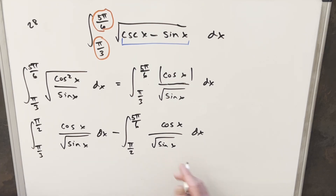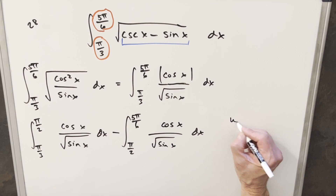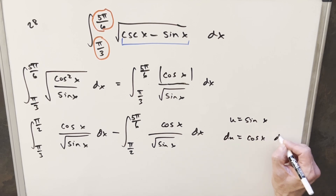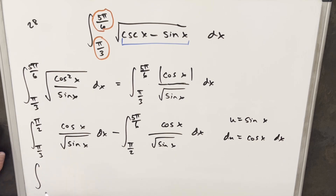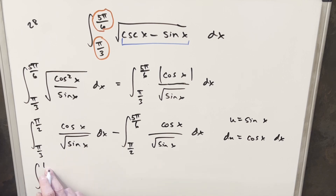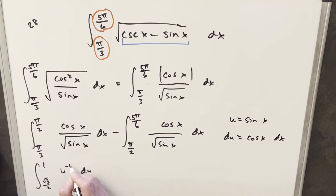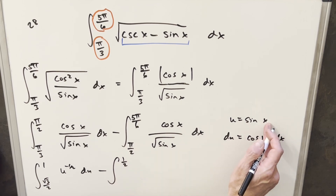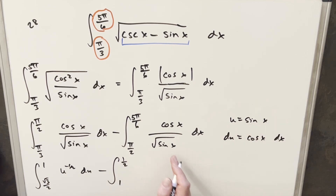Now we have the same integrand in both cases, so I'll do a u-substitution. Let u equal sine x, then du equals cosine x dx, which appears in the numerator in both cases. Updating the bounds: for the first integral, sine of π/2 gives upper bound 1, and sine of π/3 gives lower bound √3/2. The integral becomes u to the minus one-half du. For the second integral, sine of 5π/6 gives 1/2 and sine of π/2 gives 1, so the bounds go from 1 down to 1/2, and we again have u to the minus one-half du.